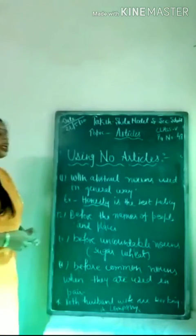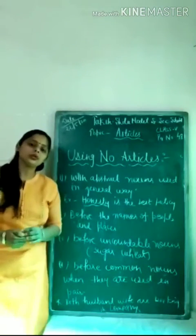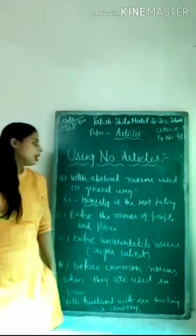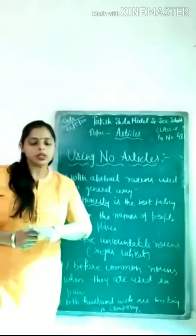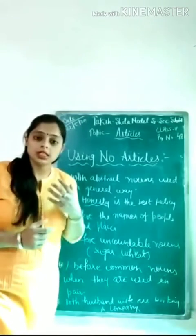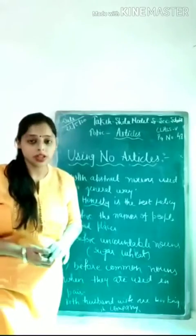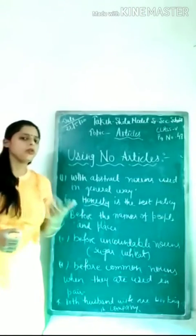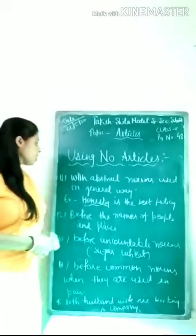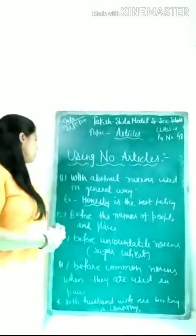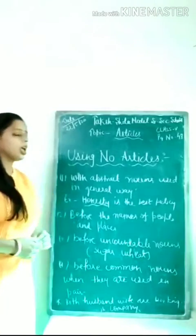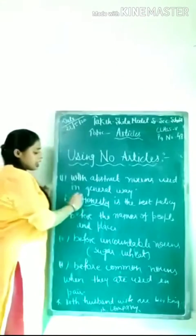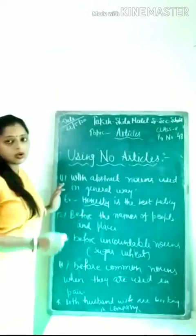Now, when we do not use articles. With abstract nouns used in a general way — abstract nouns are those we can feel but cannot touch, like honesty, happiness, sadness. For abstract nouns, we do not use A, An, or The. For example, 'Honesty is the best policy.' We never say 'the honesty,' 'a honesty,' or 'an honesty' — those are wrong.